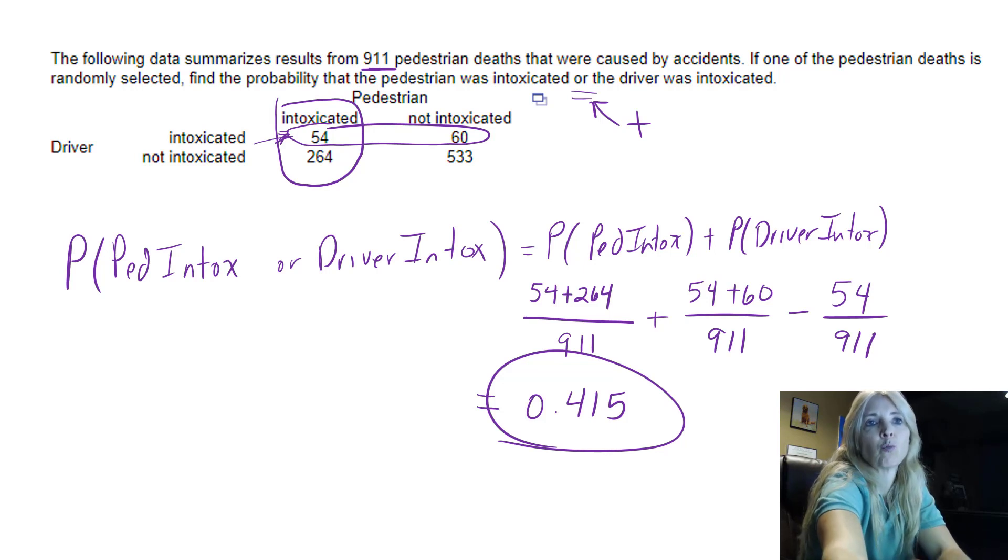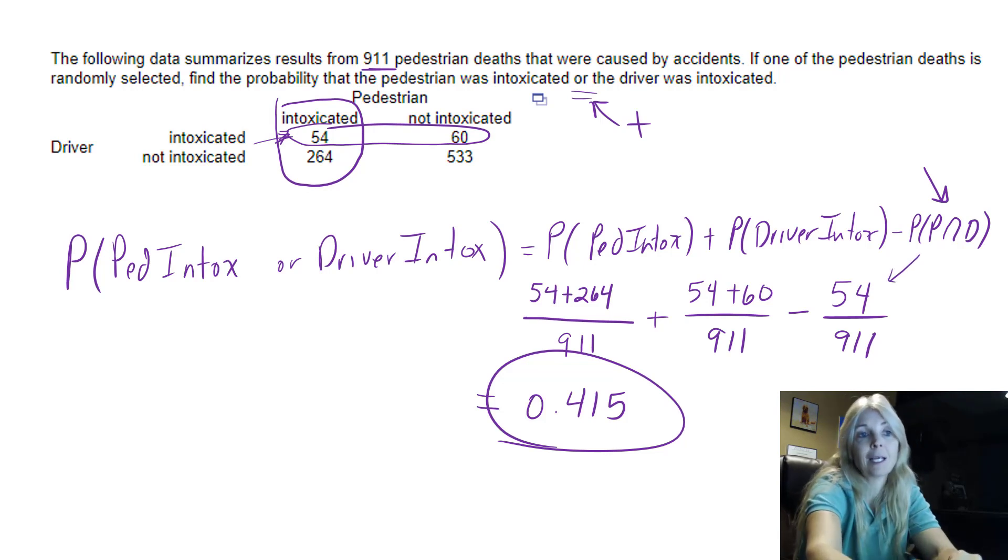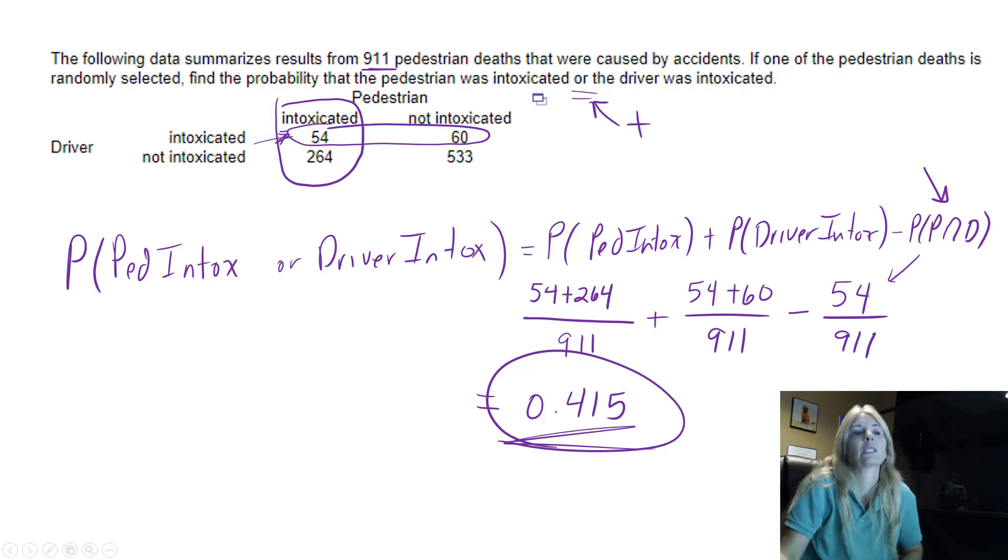Typically you always write this, I'm going to just say pedestrian intersect driver. You typically always write that piece. It could be zero, but in this case it wasn't. So it reminds you that you definitely need to subtract that piece out. And again, it's easy to see with the table, right? Because it got counted twice.